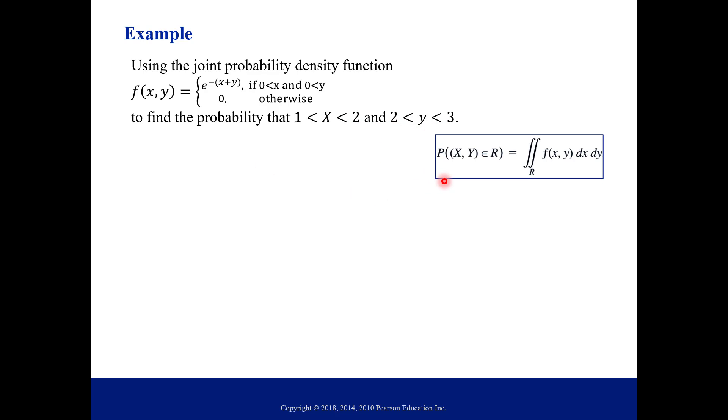So going back to what we just learned or talked about, this probability that X and Y are within this region R is equal to the double integral over R of our probability density function. So let's fill that in. So probability that X is between 1 and 2, Y is between 2 and 3 equals our double integral. And so notice our integrand is just our density function, and then our limits of integration are the ranges for our X and our Y random variables. And then we just integrate.